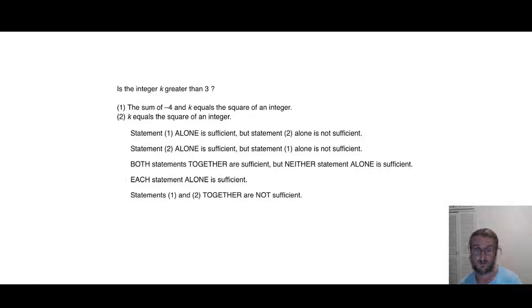Let's start with it. That's pretty straightforward. It's saying is k greater than 3? Then, the sum of -4 and k equals the square of an integer. So we'll say -4 plus k is equal to m squared. And we're assuming that m is an integer, but we don't really need to write that down.